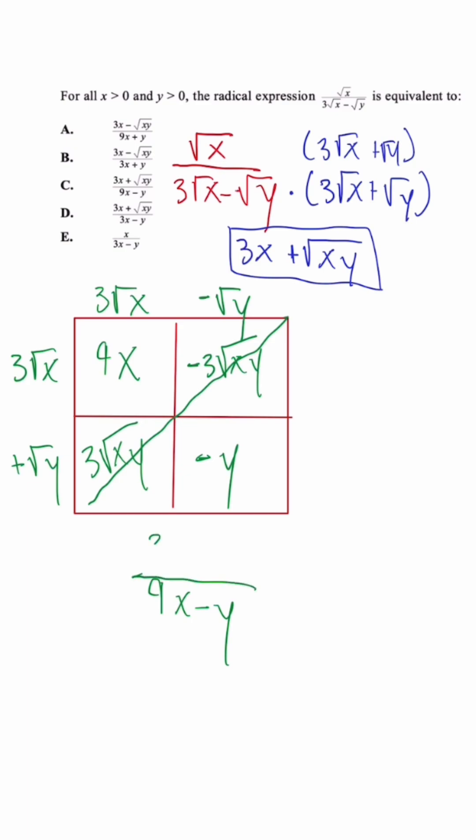And then we could put the numerator on top, which is 3x plus radical xy. So when we look at our answer choices, the correct answer would be answer choice C.